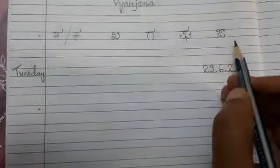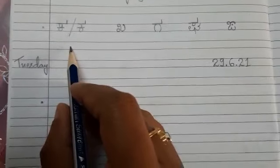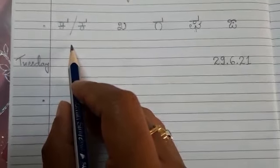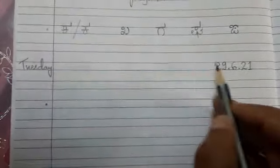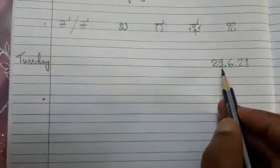Leave this line, leave this line, come to next line. Write today's date and day 29,